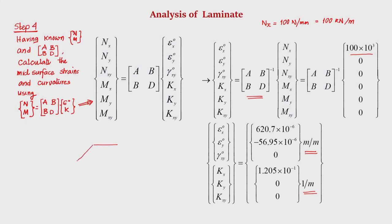Because the laminate is unsymmetric, applying only Nx (uniaxial tensile loading along x) not only produces in-plane strains but also produces curvature. That is, even though only Nx is applied, the mid-surface bends. This coupling between membrane loading and bending is a direct consequence of the unsymmetric layup with non-zero B matrix.